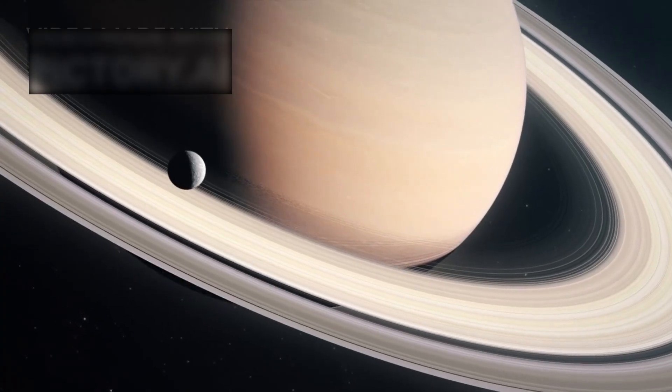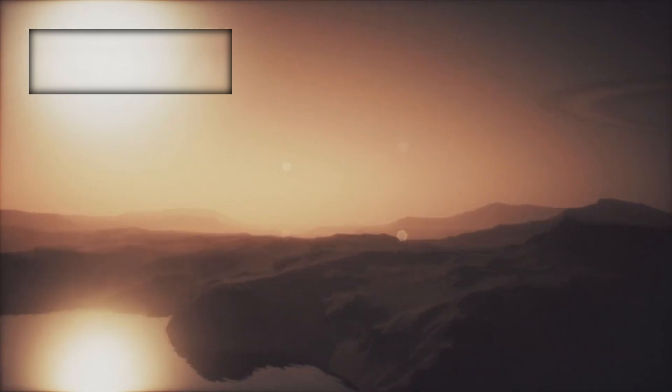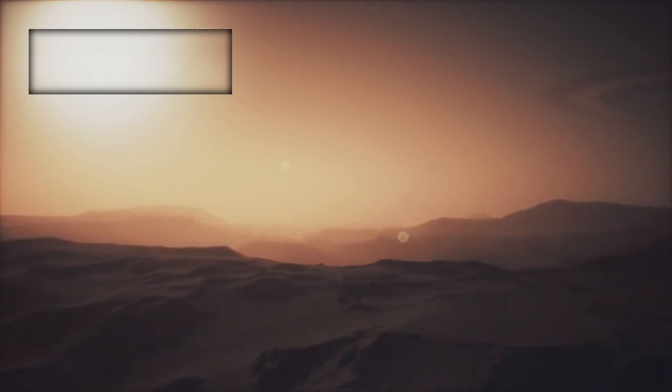Closer to home, Webb turned its attention to Titan, Saturn's largest moon. Known for its thick atmosphere, methane lakes, and icy terrain, Titan is one of the most Earth-like worlds in our solar system.